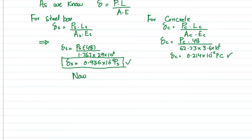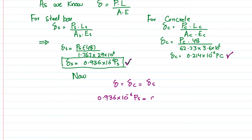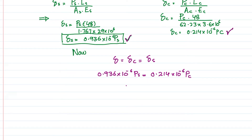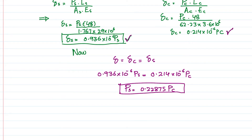Due to load P, δ = δ_c = δ_s, so we equate them: 0.936 × 10⁻⁶ × P_s = 0.214 × 10⁻⁶ × P_c. This gives us the relationship between P_s and P_c: P_s = 0.22875 × P_c.